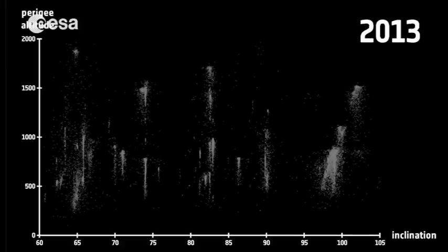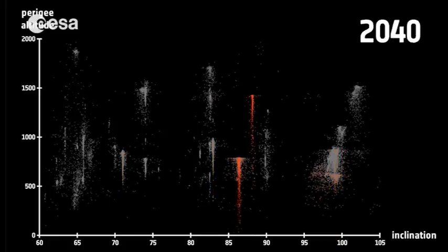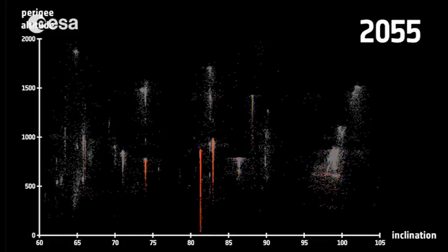For this purpose, the individual object orbits need to be broken down into their respective heights and inclinations. Now, several source regions for an increased number of collisions can be identified within the polar orbits.